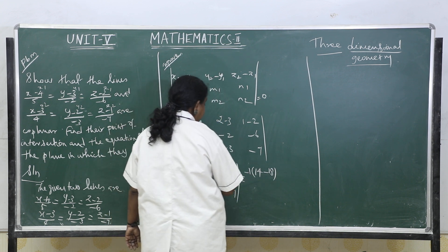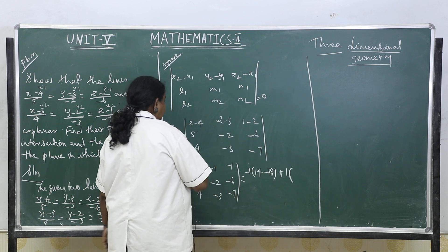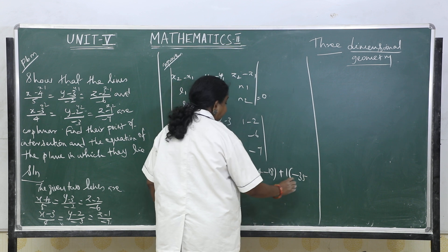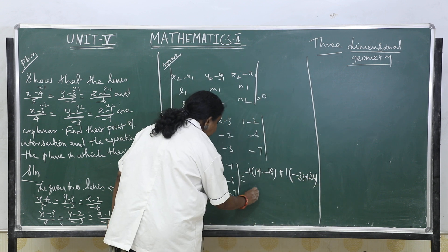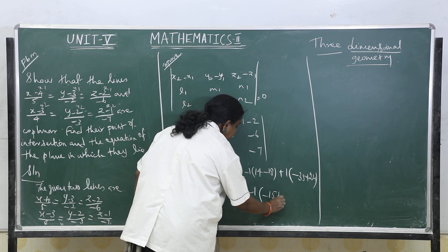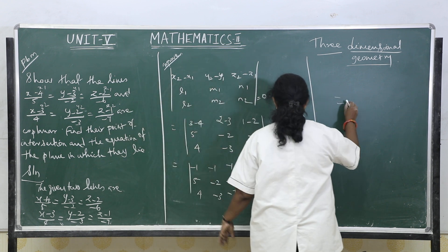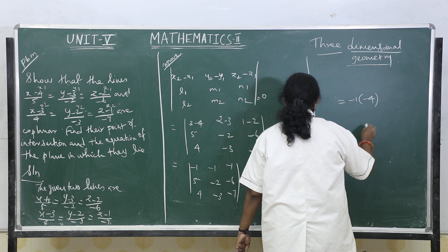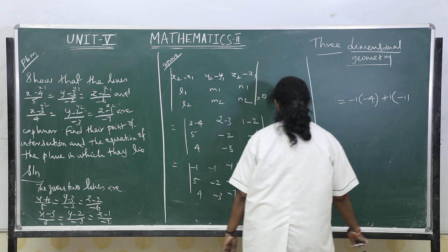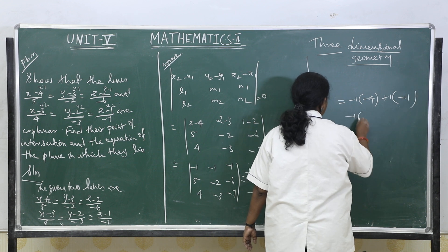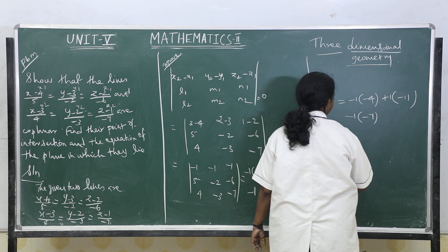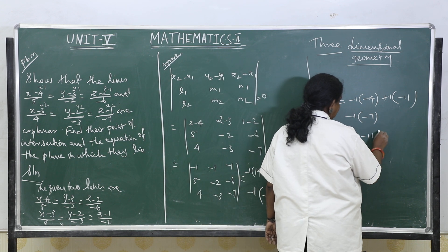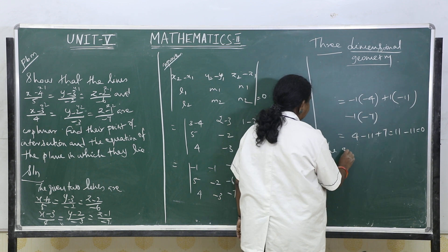Continuing the expansion: −1 × (−4) + 1 × (−11) − 1 × (−7) = 4 − 11 + 7 = 0. Simplifying, this is plus 11 minus 11 equal to 0. Therefore, the given two lines are coplanar.